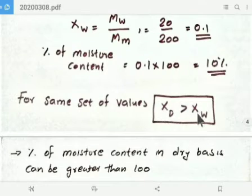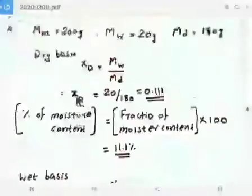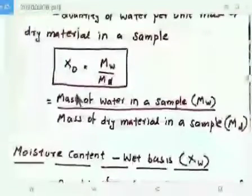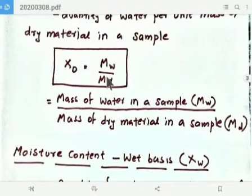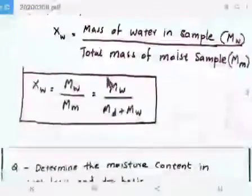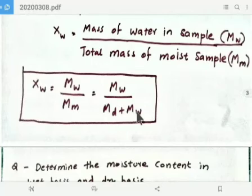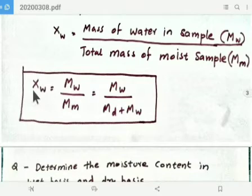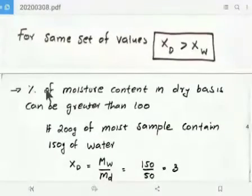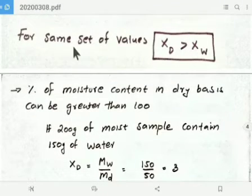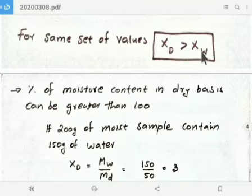Remember: for the same set of values, the fraction of moisture content on dry basis is always greater than the fraction of moisture content on wet basis. This is because on dry basis the denominator is Md — a smaller value — whereas on wet basis the denominator is Md plus Mw, a larger value. So as the denominator increases, Xw reduces. Therefore XD is always greater than Xw.